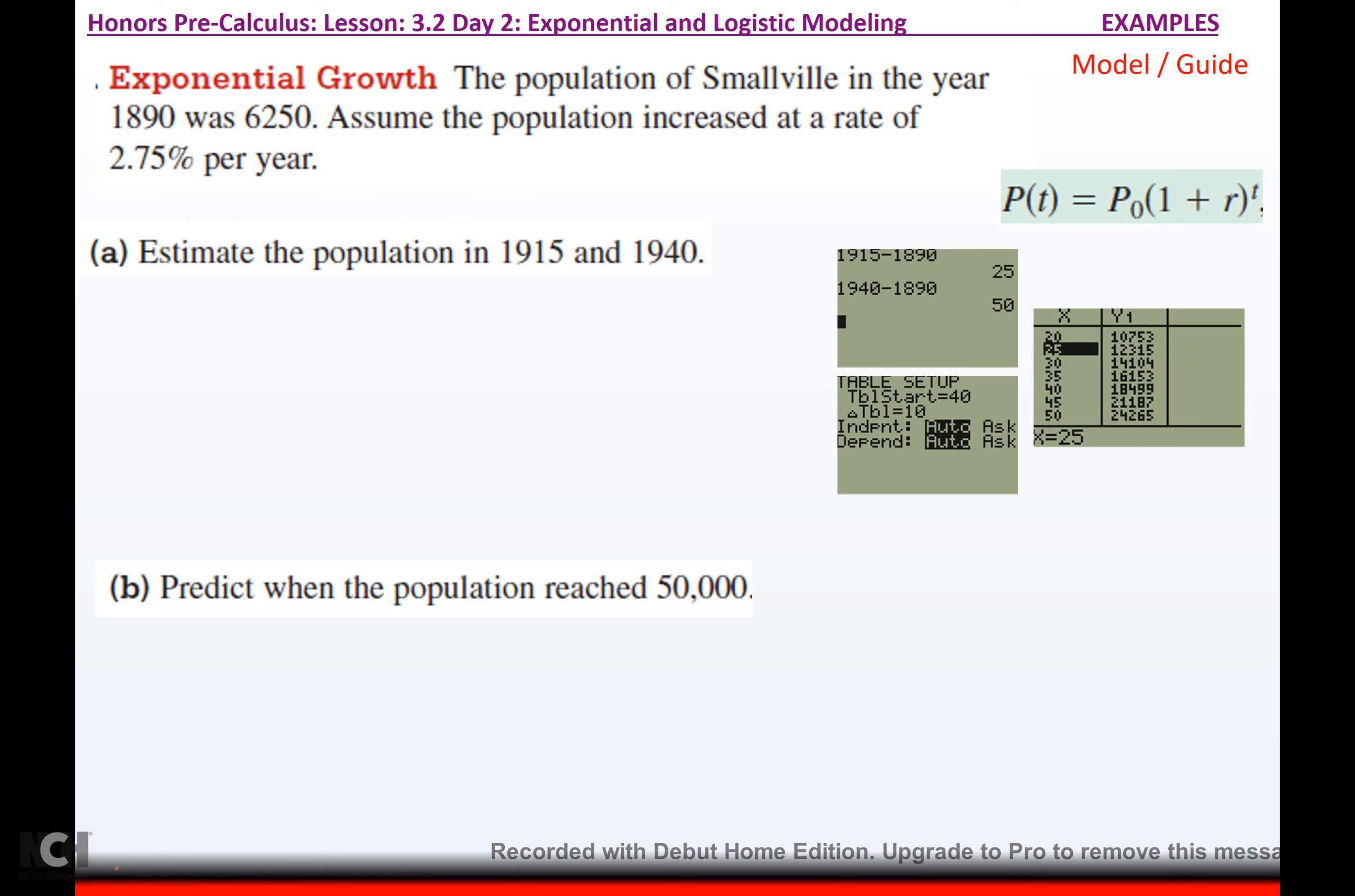It says the population of Smallville in the year 1890 was 6250. Assume the population increased at a rate of 2.75% a year. So, it says estimate the population in 1915 and in 1940. Well, if I set up my equation, it says the population at a certain time will be the initial population, which was 6250, times 1 plus the rate, which would be 0.0275 to the T. So, this is going to be 6250 times 1.0275 to the T.